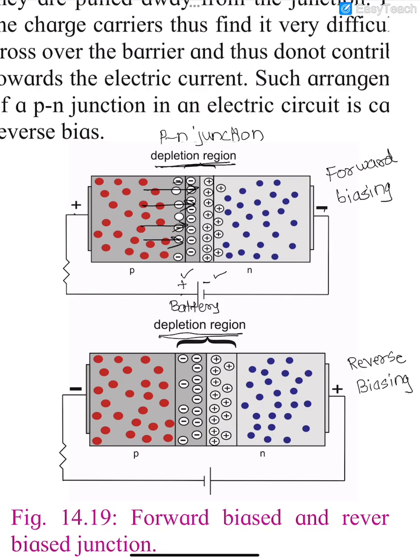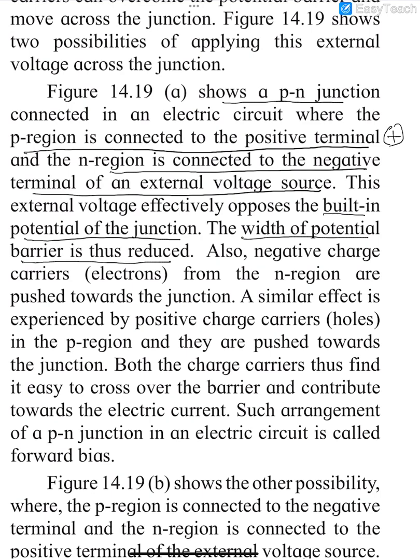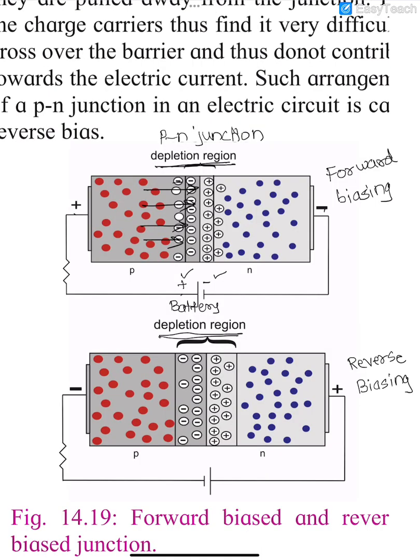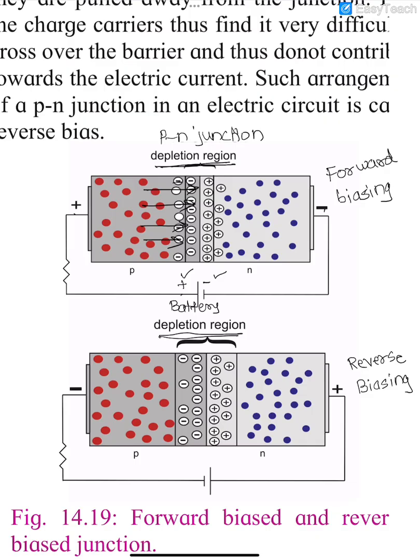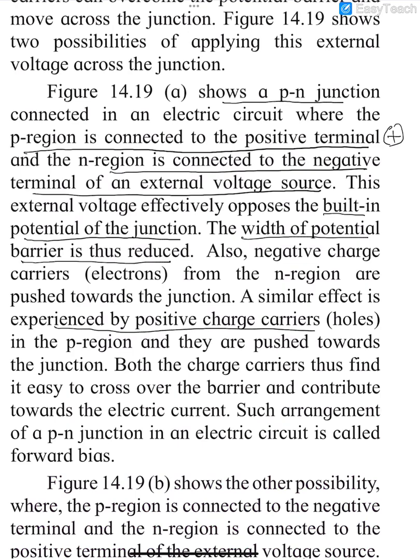The negative charge carriers, that is electrons from the N region, are pushed towards the junction. A similar effect is experienced by positive charge carriers in the P region — they are also pushed towards the junction. Thus both charge carriers find it easy to cross the barrier and contribute to the electric current, since they are moving towards each other at the junction.